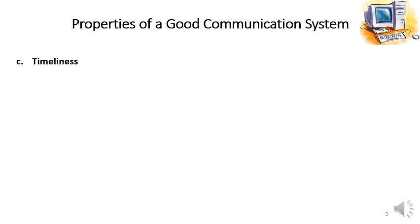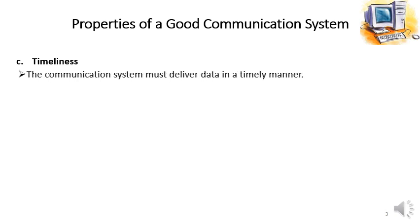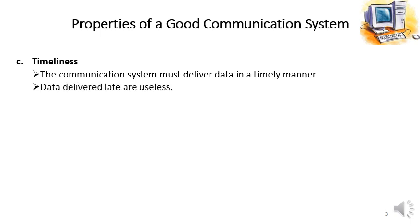The third property is timeliness. The communication system must deliver data in a timely manner. Data delivered late is useless in some applications where we need a response on a real-time basis. Especially in flight navigation systems, if the network delivers information late, that will be useless and will have catastrophic results.